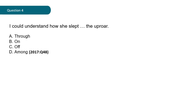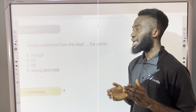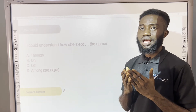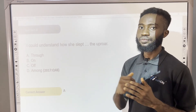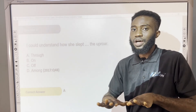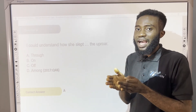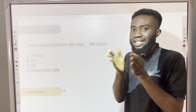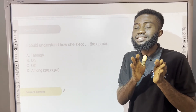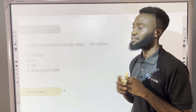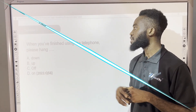The correct answer is option A — how she slept through the opera. It cannot be slept on because the opera is not a concrete surface that one can sleep on. Sleeping through the opera means that despite the noise and hubbub going on at that moment, she slept soundly like a baby. Let's go to the next question.